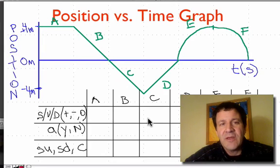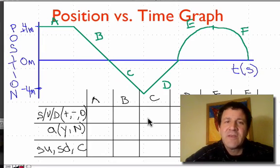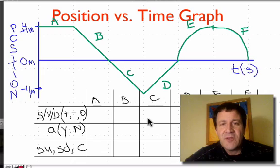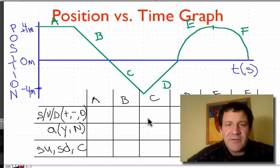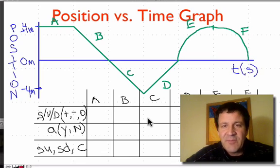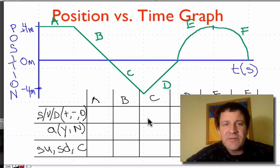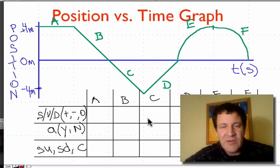This video is officially part three of the position versus time graph series. In this video, we're going to put together the constant velocities and the speeding ups and the slowing downs and see if we can put it all together into one graph.